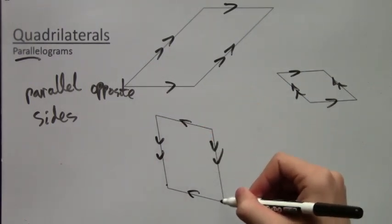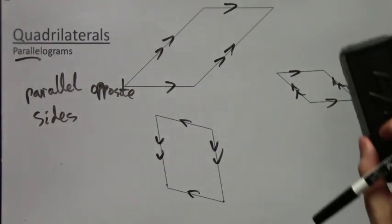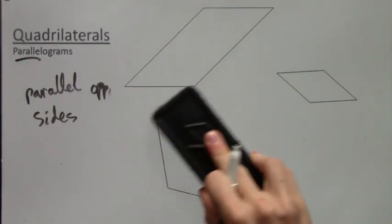As you can see, those are the opposite sides and they are parallel. So let's move on to the next type of special quadrilateral.